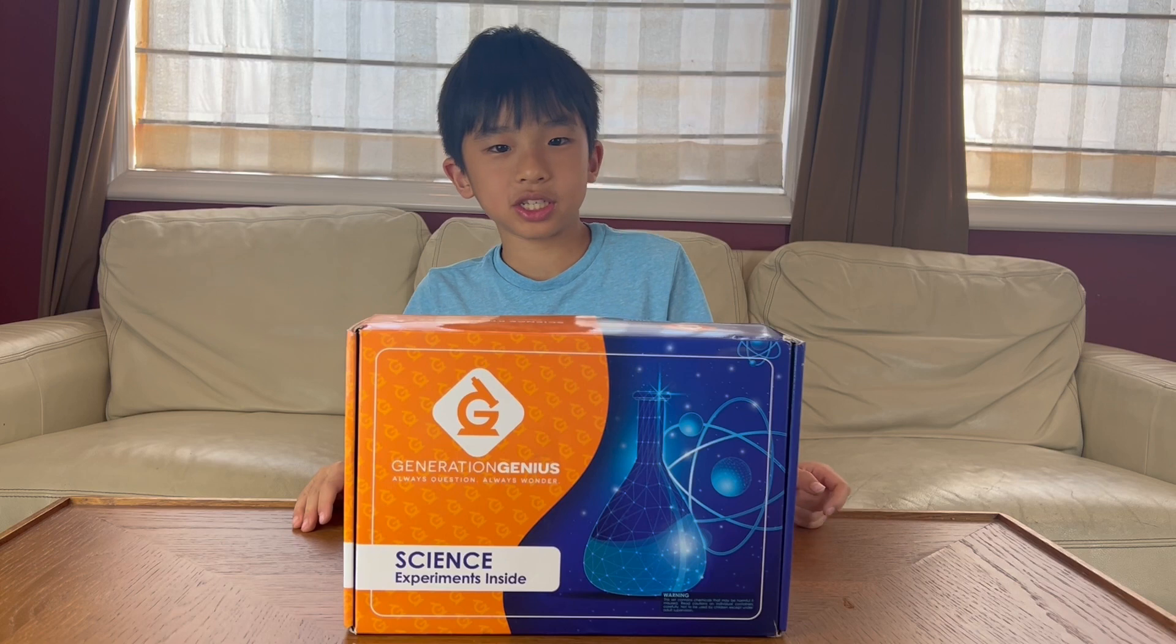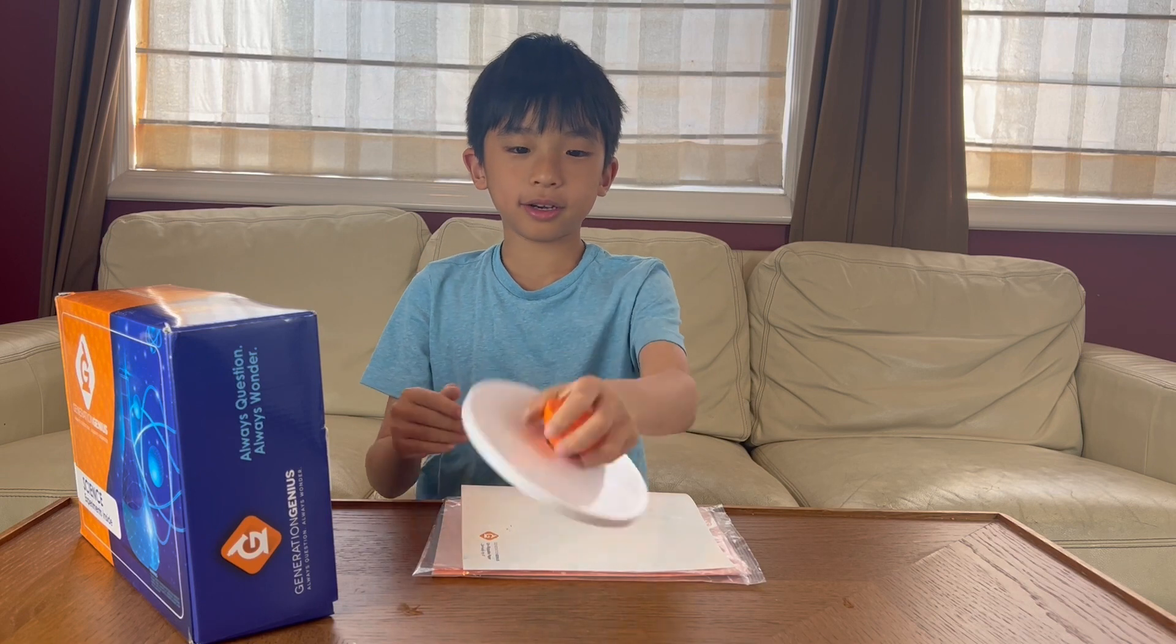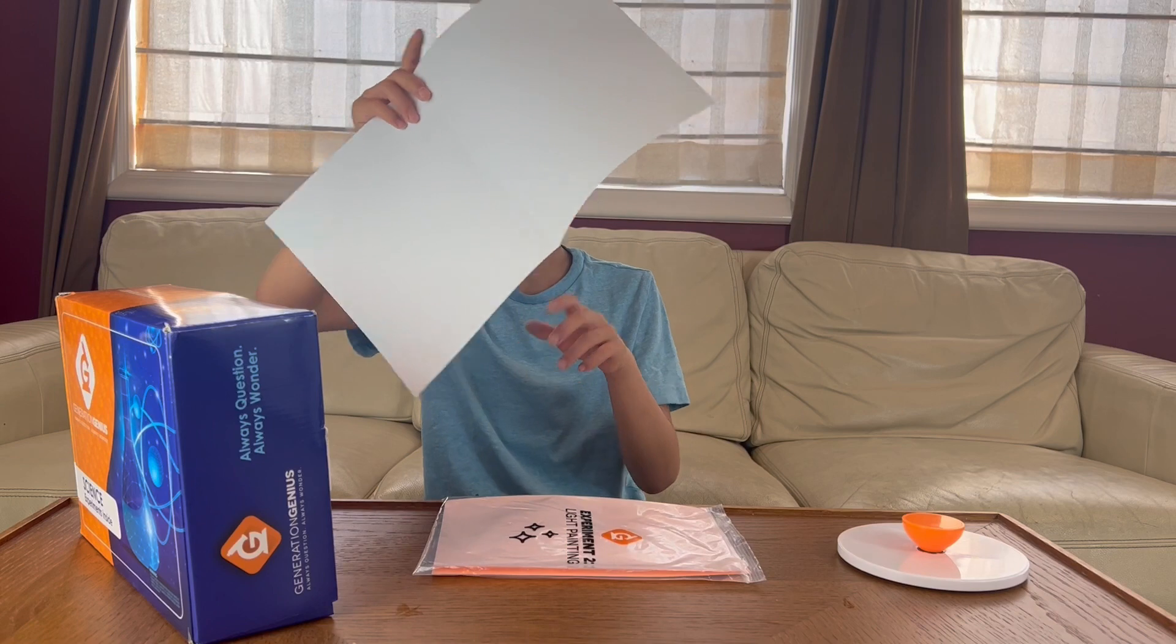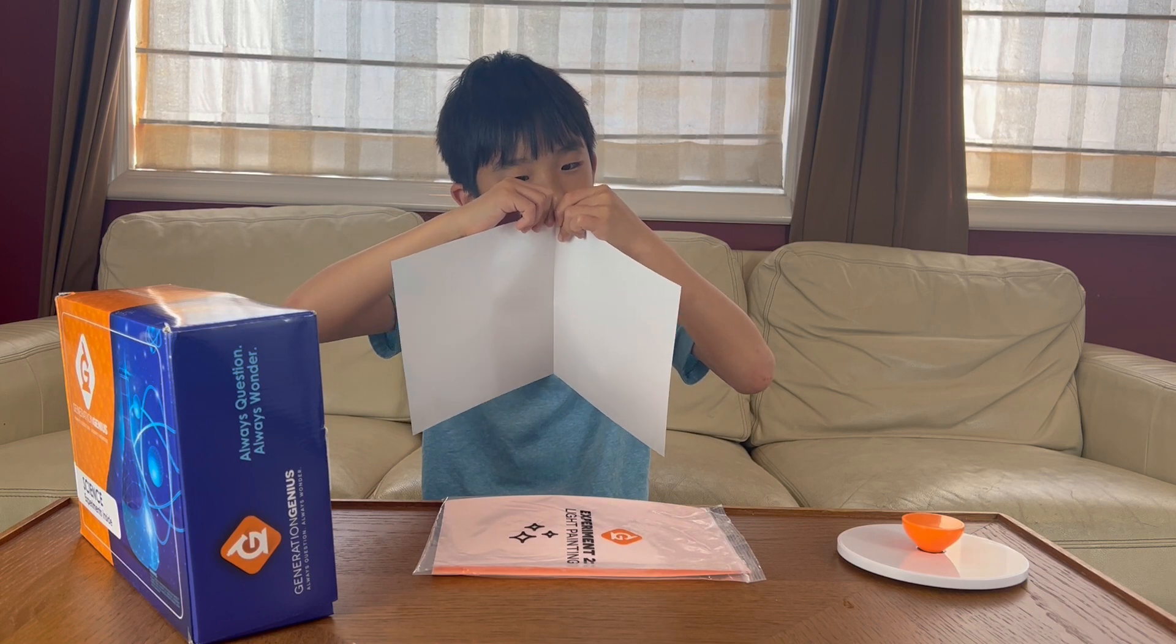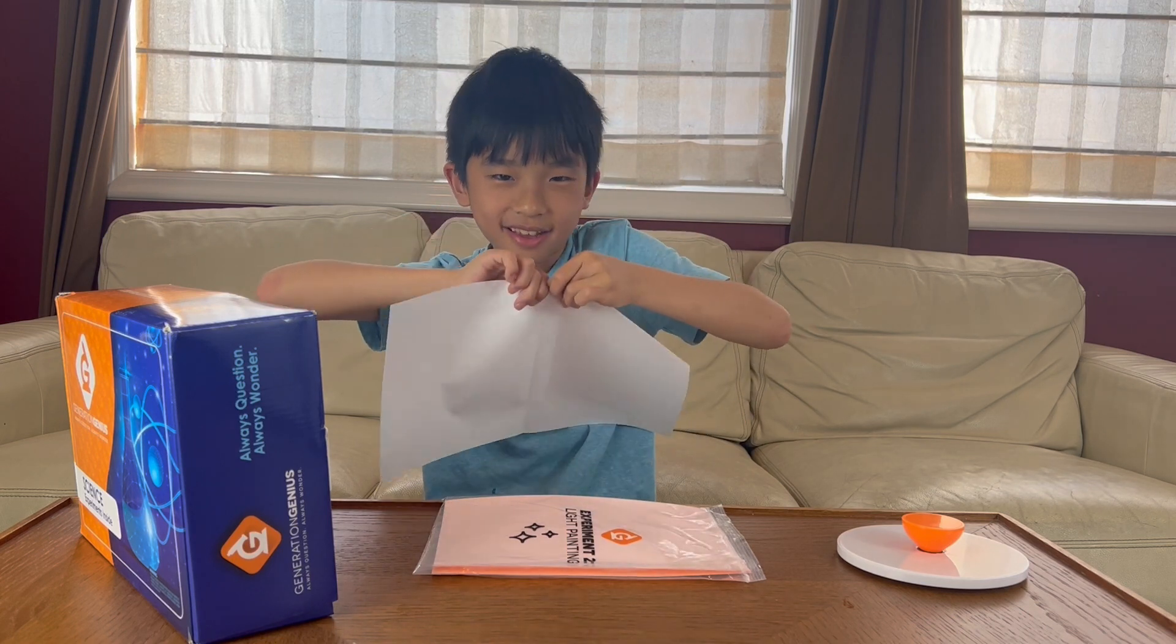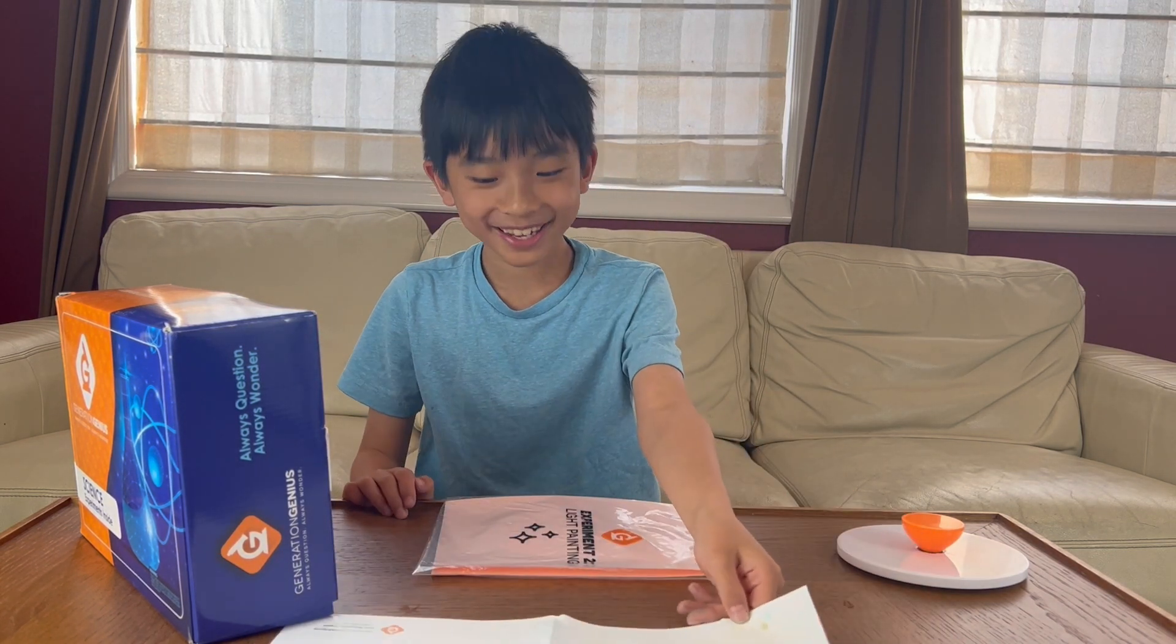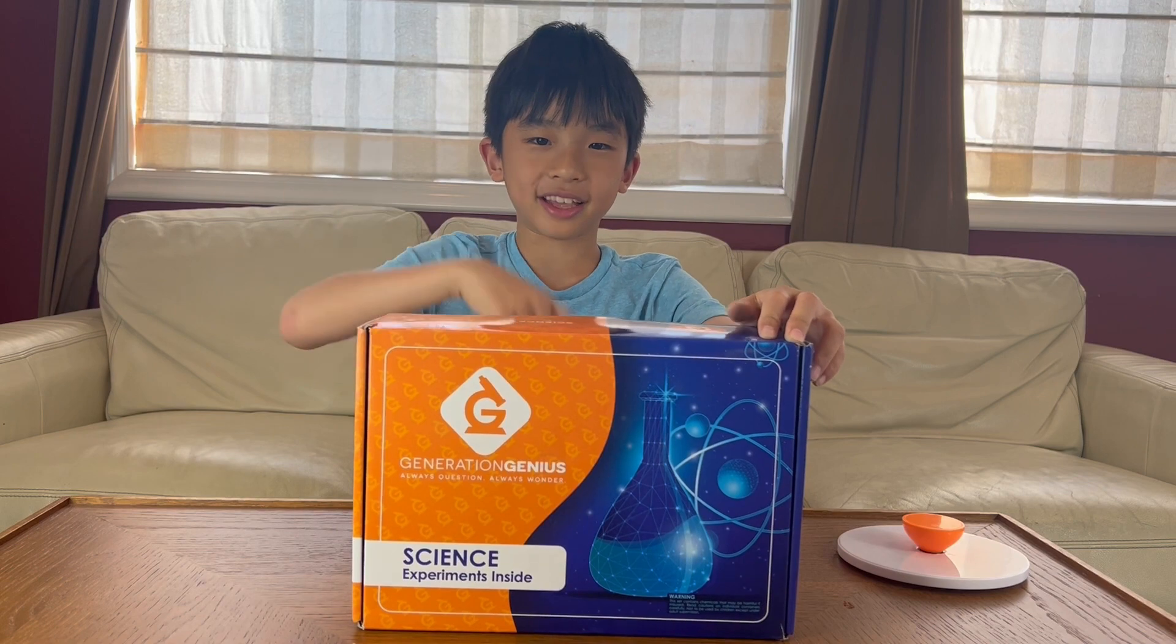And that's the Generation Genius Science Kit. My favorite project was this one with the wheel. It was really cool. Plus you can keep it and use it for the future. But now it's time to see if I can rip the unrippable paper. Let's see. I'm going to rip it where there's a crease. Wow. This is actually unrippable. You want to try? It's unrippable. And that's it. If you want to order this box for yourself, you can purchase it at the link in the description. Bye.